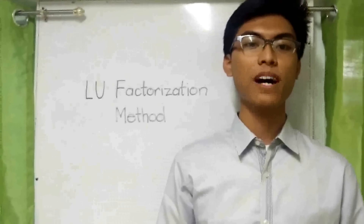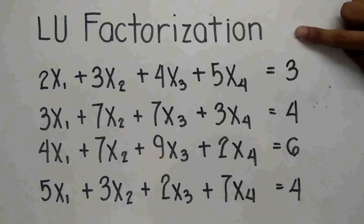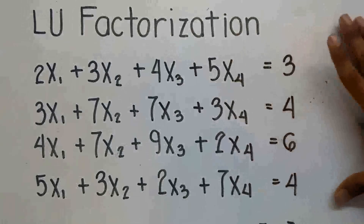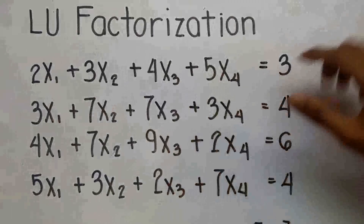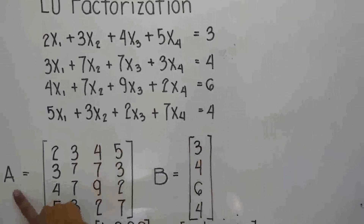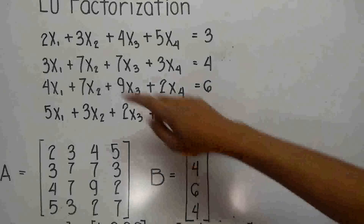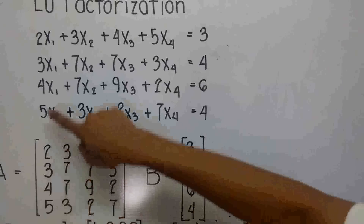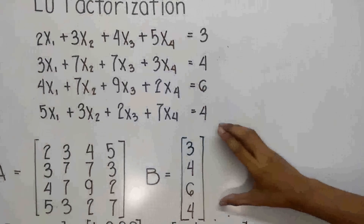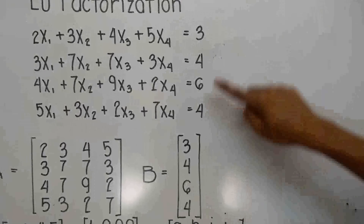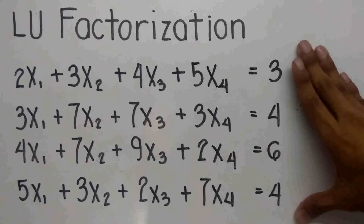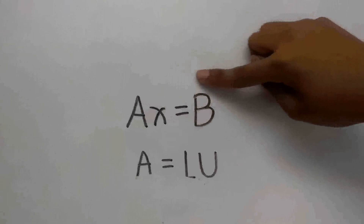The following example will give us a clear understanding of how this method really works. We are going to apply the LU factorization method using the Doolittle's method on this set of linear equations to solve for the values of x1, x2, x3, and x4, respectively. First, we will construct the coefficient matrix A made from the coefficients of the variables in the given equations. After that, we construct the constant matrix B made from the constants of the given set of equations. We can rewrite this equation into a product of the coefficient matrix A and x, equal to the constant matrix.